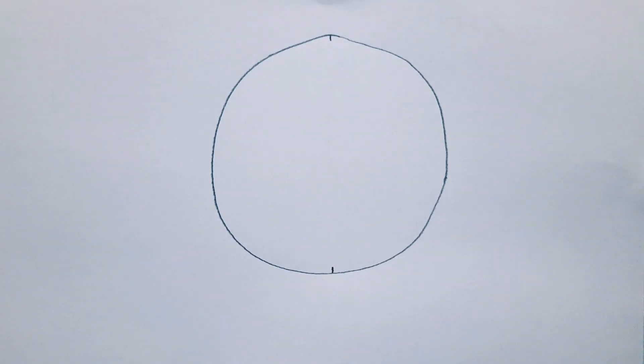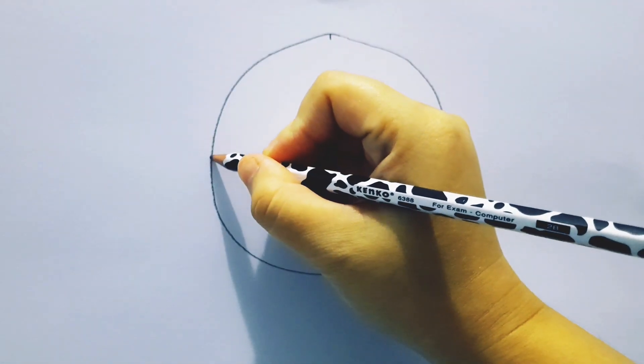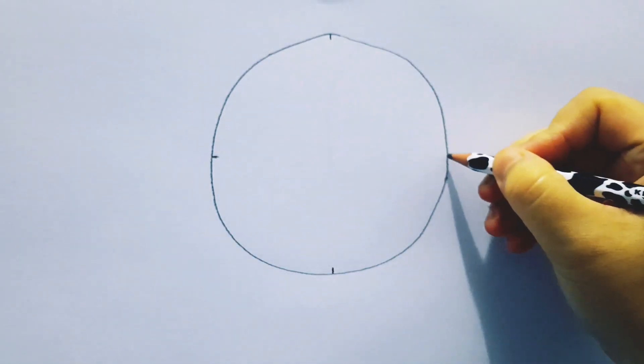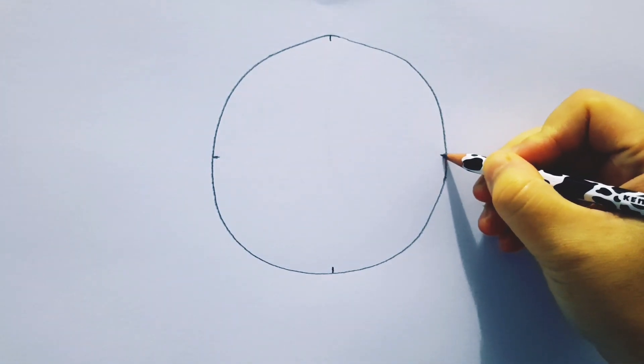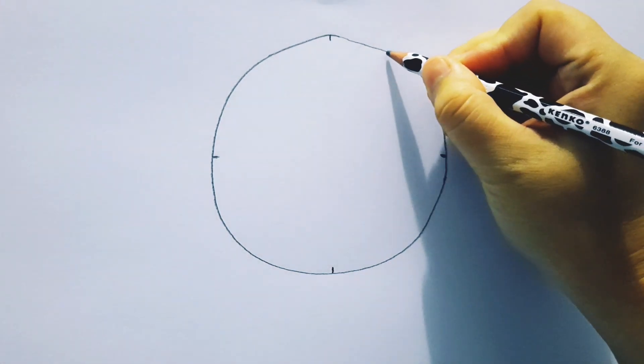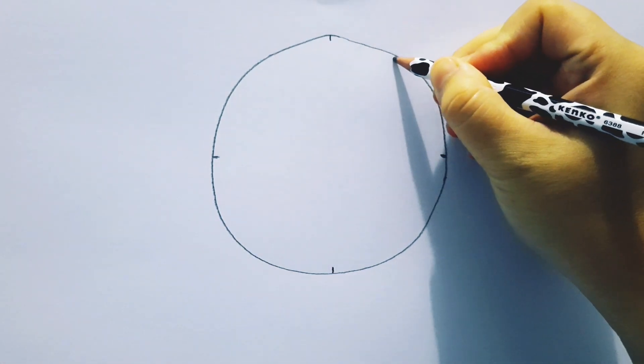Second, let's make some marks for half circle vertically and horizontally like this. Let's try to make it even. They don't have to be too long and too bold as long as you can see them clearly. Got it?